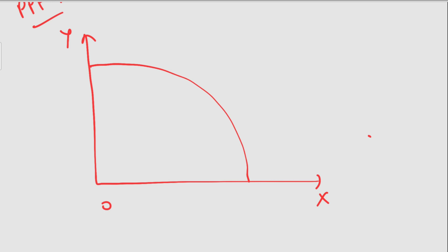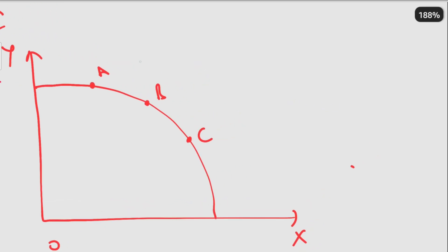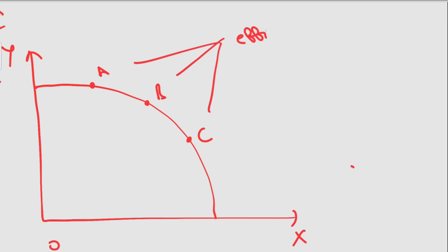So what does this curve show? It shows the maximum attainable combination of two products, X and Y, that can be produced if a country uses its resources efficiently. Suppose there are points A, B, and C on this curve. These points suggest efficient utilization of resources.